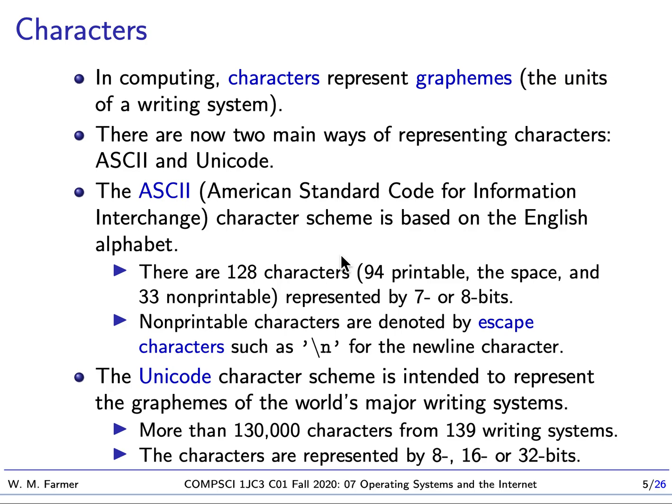The non-printable characters are denoted by escape characters. For instance, backslash n denotes the newline character, which is a control character that basically means start printing with a newline. ASCII is a very biased way of handling characters because it's basically just the characters of an English alphabet — it's not even suitable for closely related writing schemes like German or French.